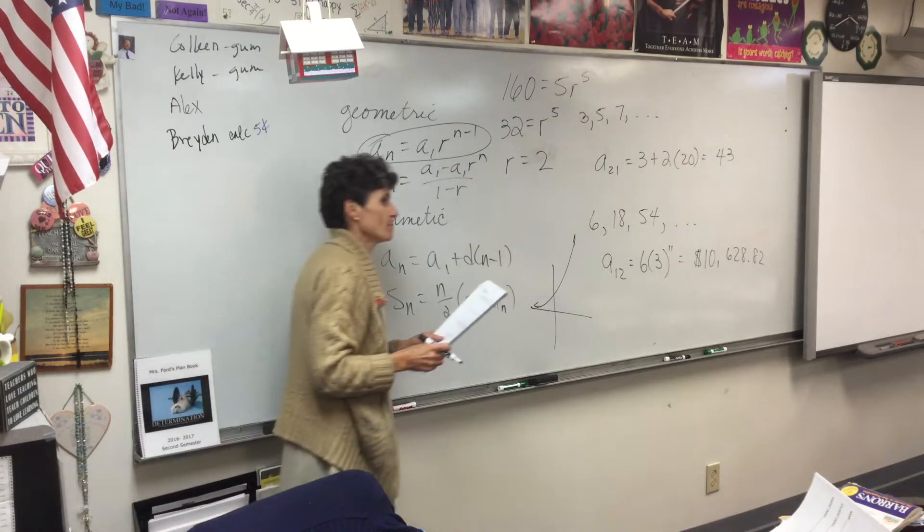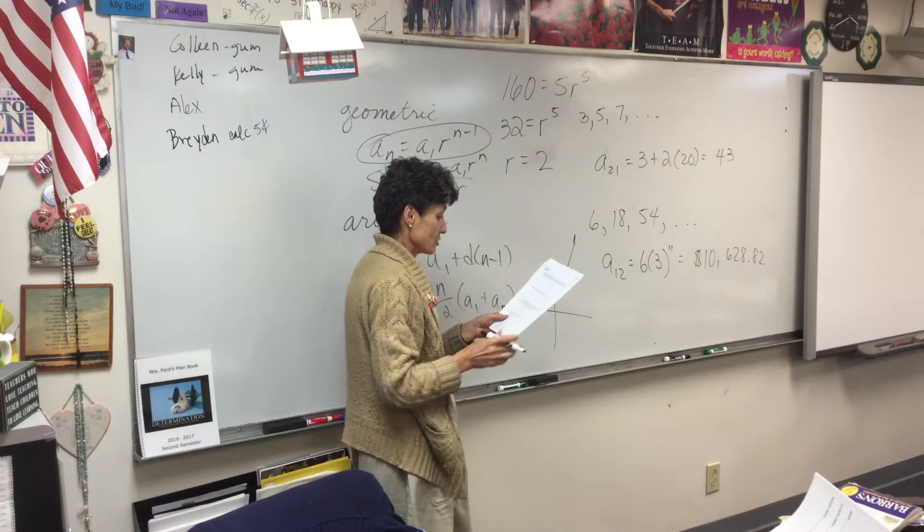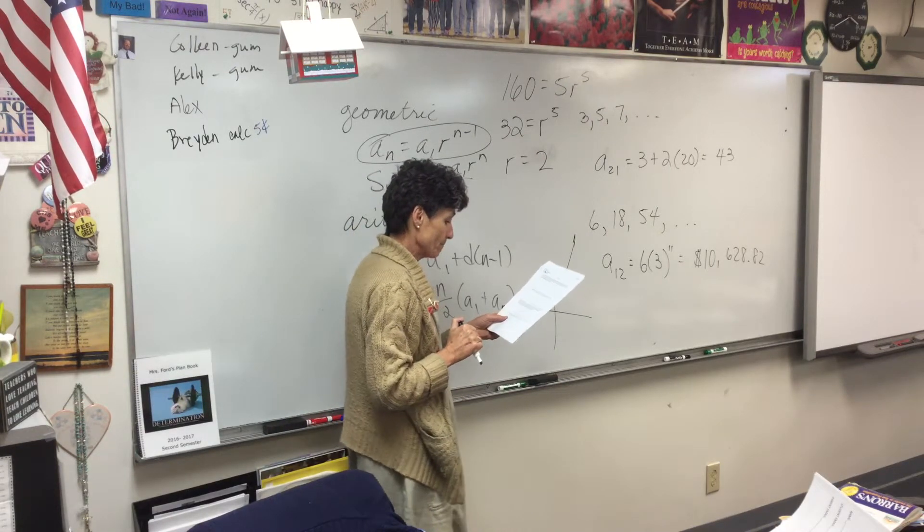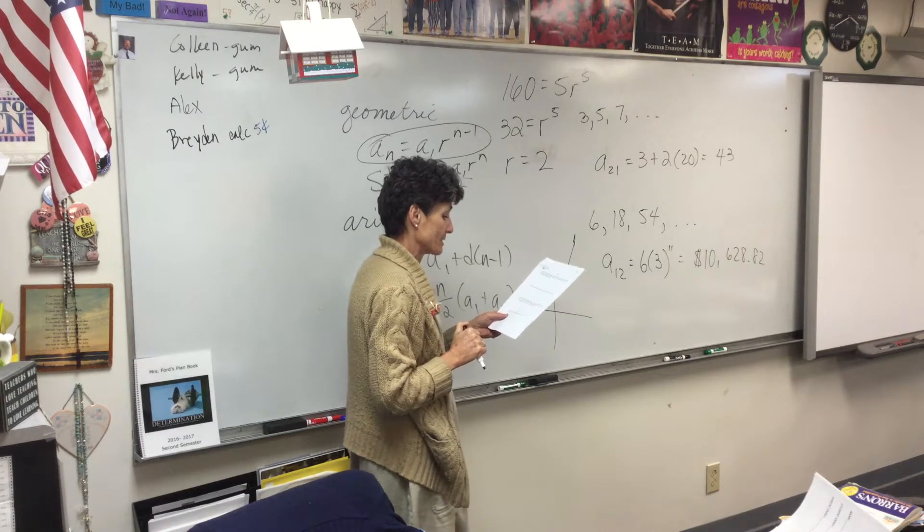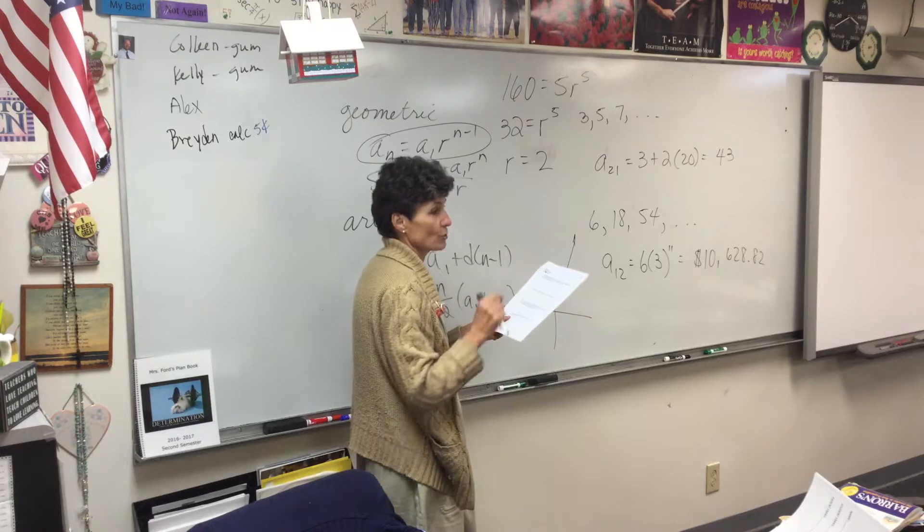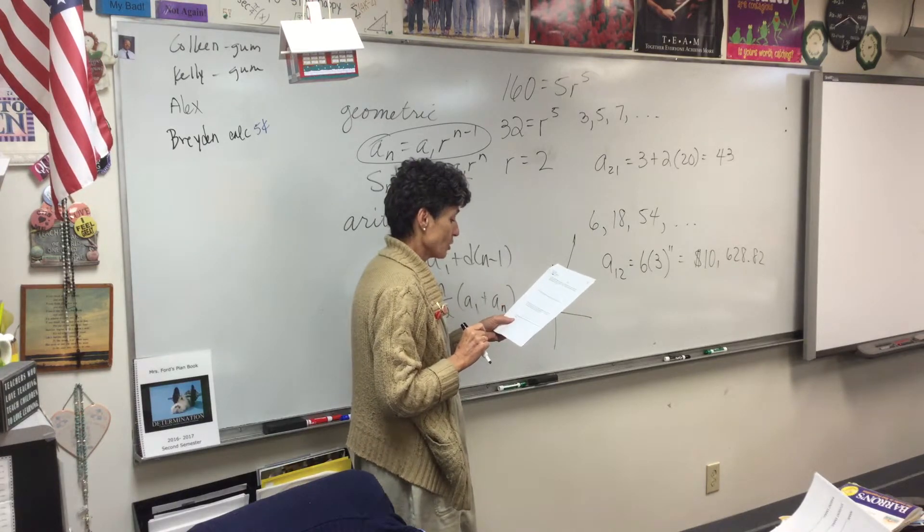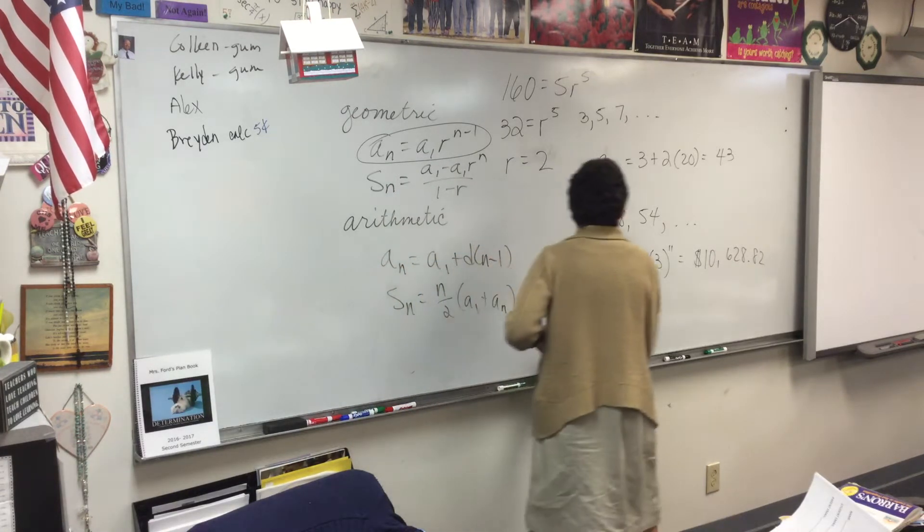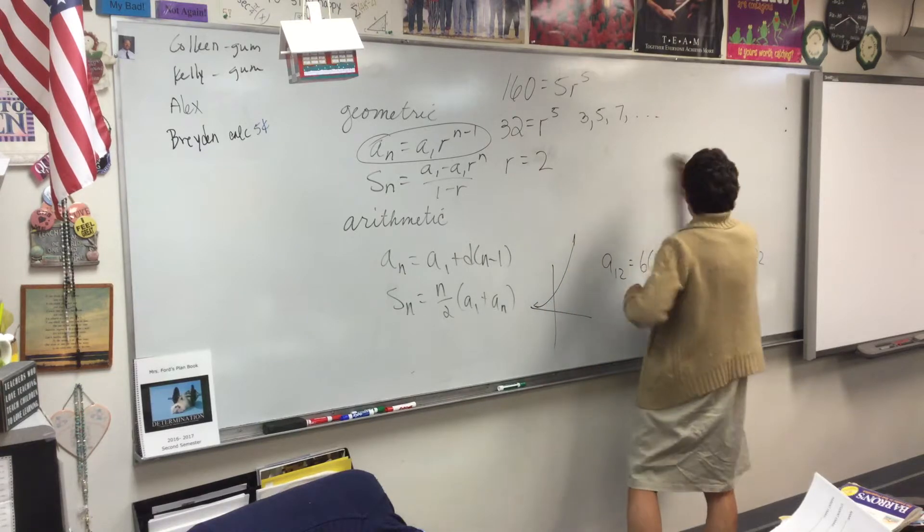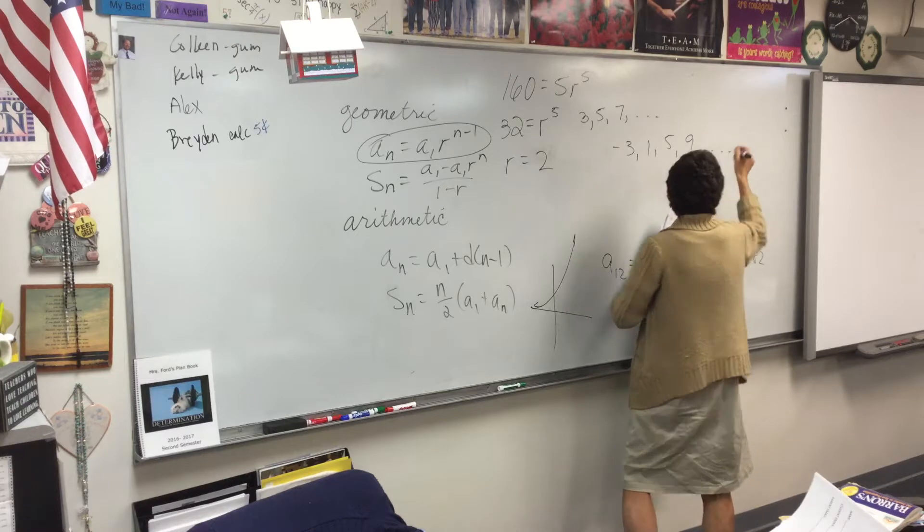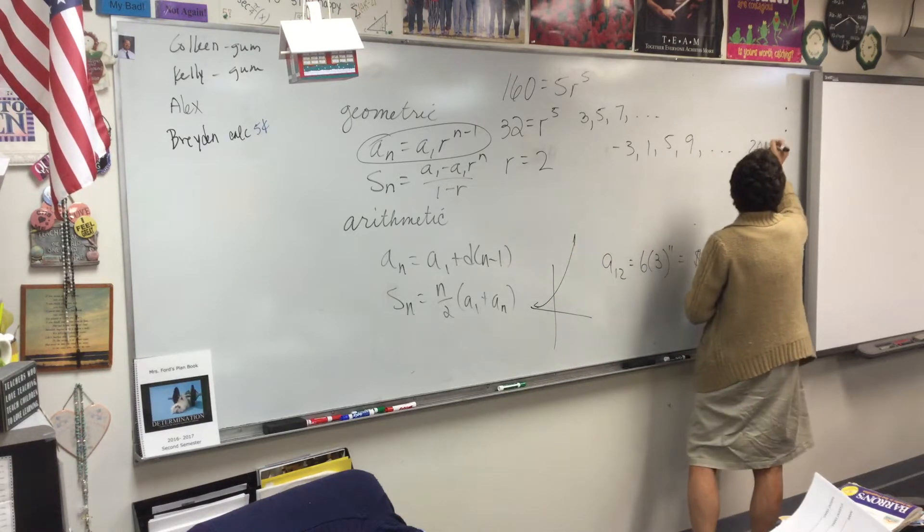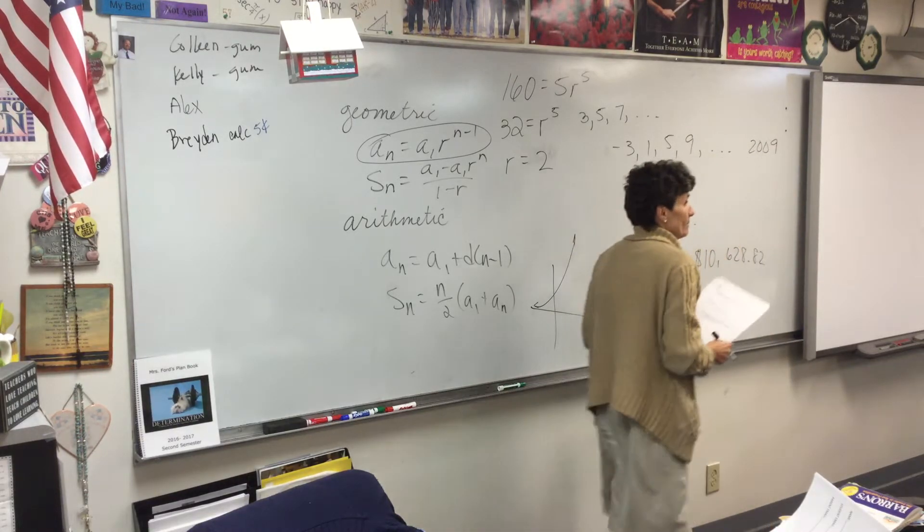All right, number 4. Probably our last one. Here we go. Is 2,009 a term of this sequence or not? And you can't just say yes or no. You have to explain yourself. So, if we kept going with this sequence, negative 3, 1, 5, 9, would eventually we get to the number 2,009?